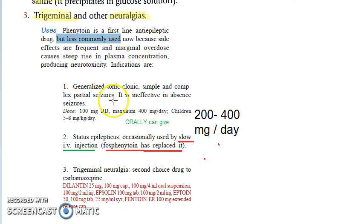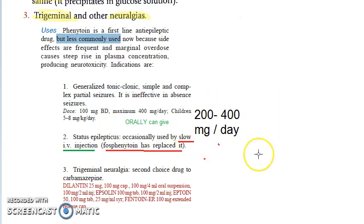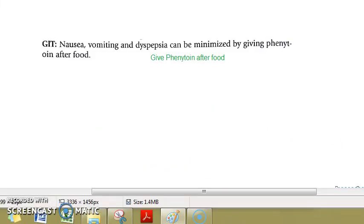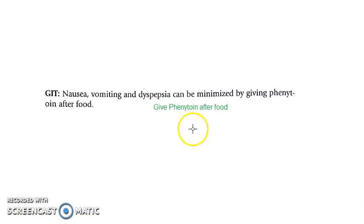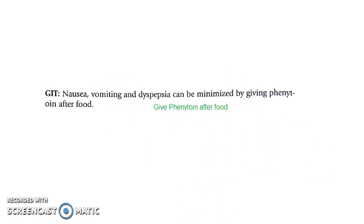With phenytoin you can give it orally — 200 to 400 mg per day. For status epilepticus it is given IV. Remember to give phenytoin after food — after you eat, give phenytoin — why? You can minimize vomiting and nausea if you give it after food. References for this video are Rang and Dale's textbook and KDT textbook.